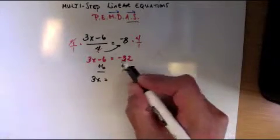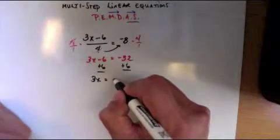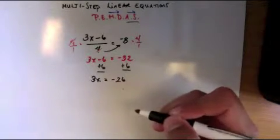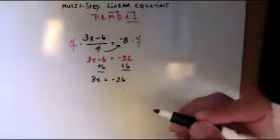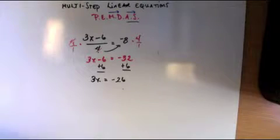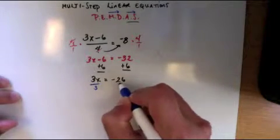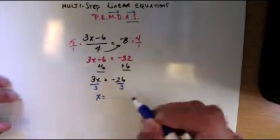Now that I have this, now I do the same thing. I have to undo addition and subtraction first. So this becomes plus 6, plus 6 on both sides. 3x equals negative 32 plus 6, which is negative 26.